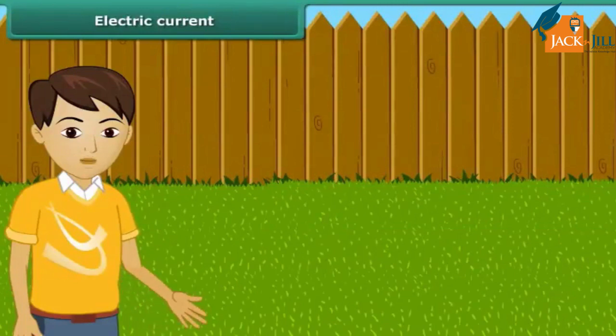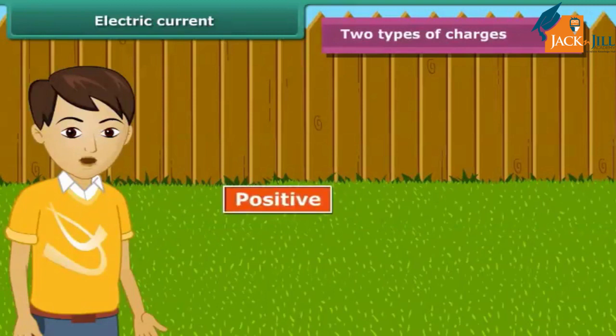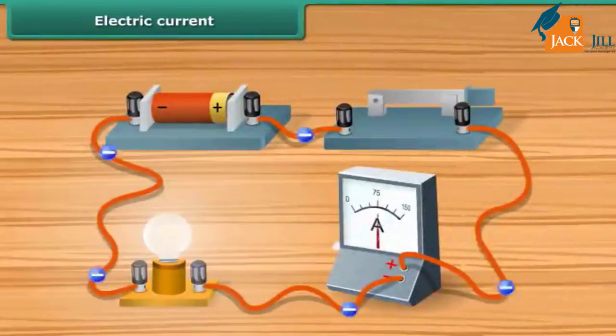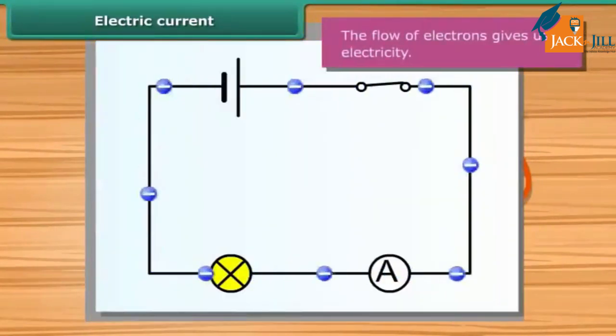We have just studied about electric charges and the forces they exert on one another. We have learned there are two types of charges: positive and negative. When charges transfer from one body to the other, the bodies are said to be charged. The moving or flowing charges produce an electric current. An electric current consists of a movement of negative charges, that is electrons. The flow of electrons gives us electricity.